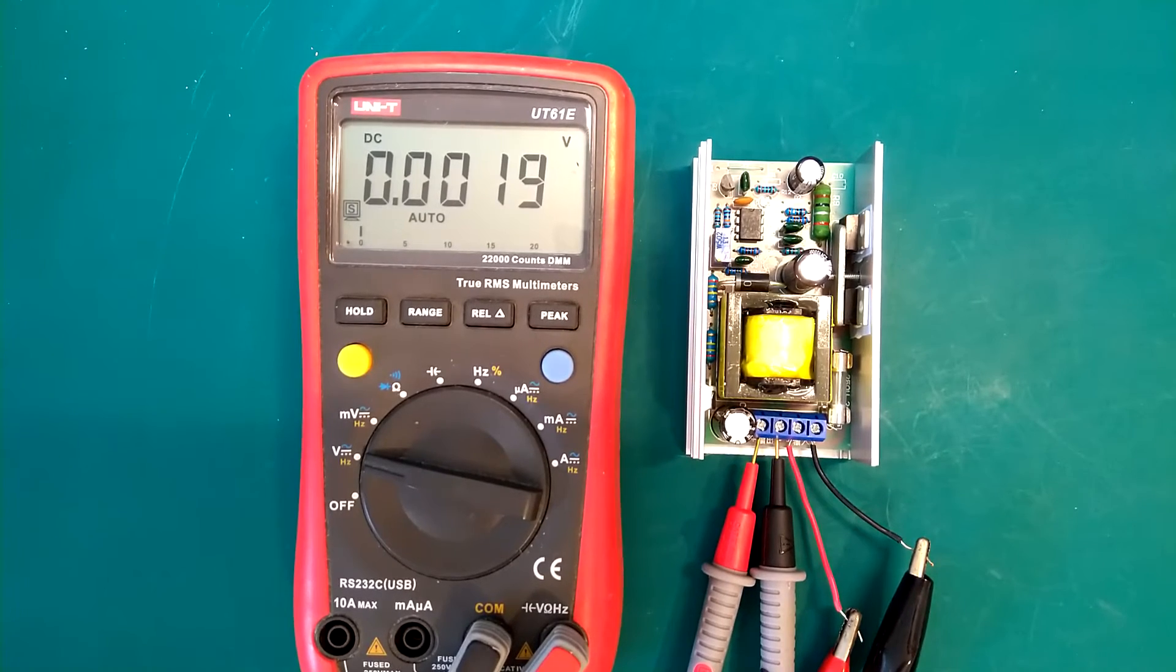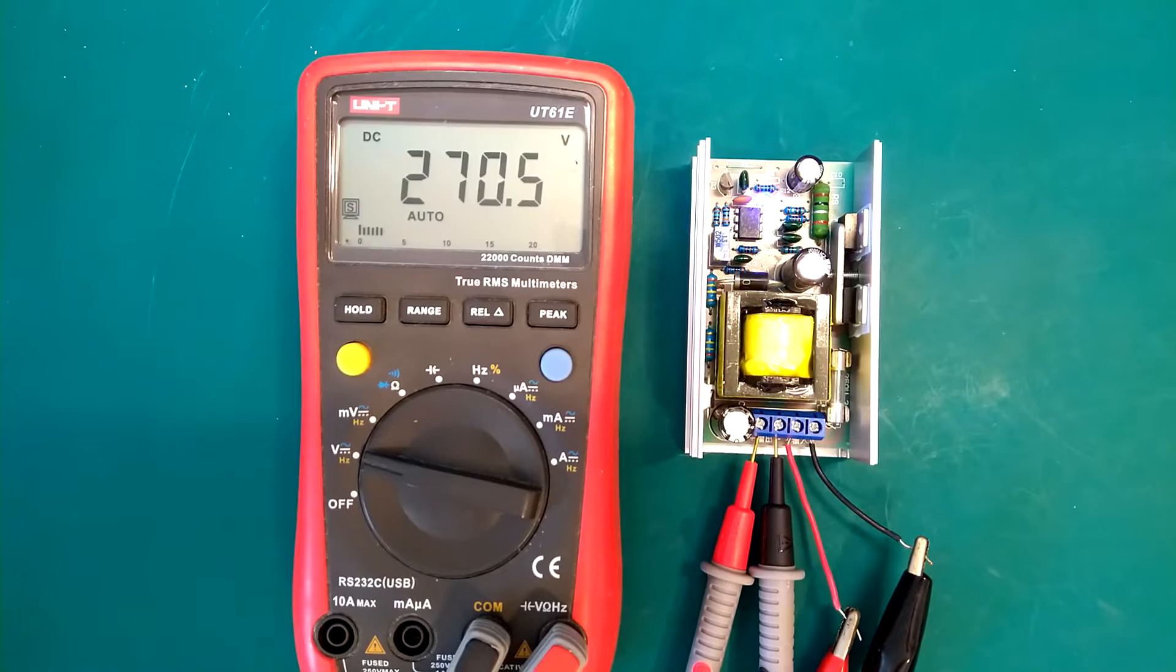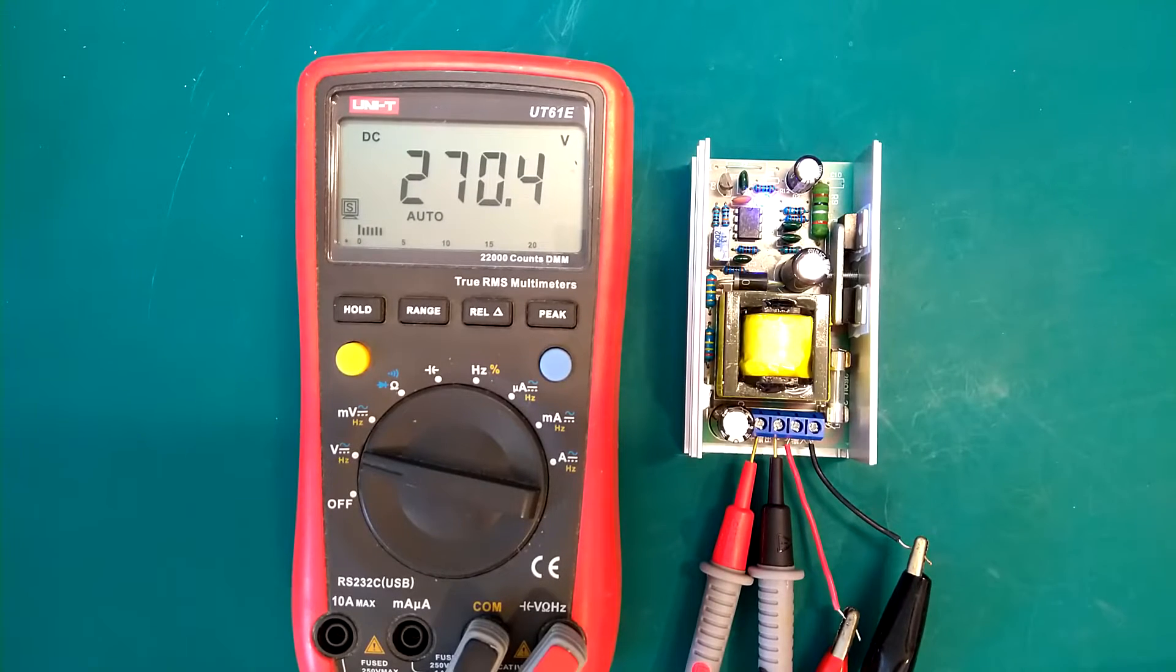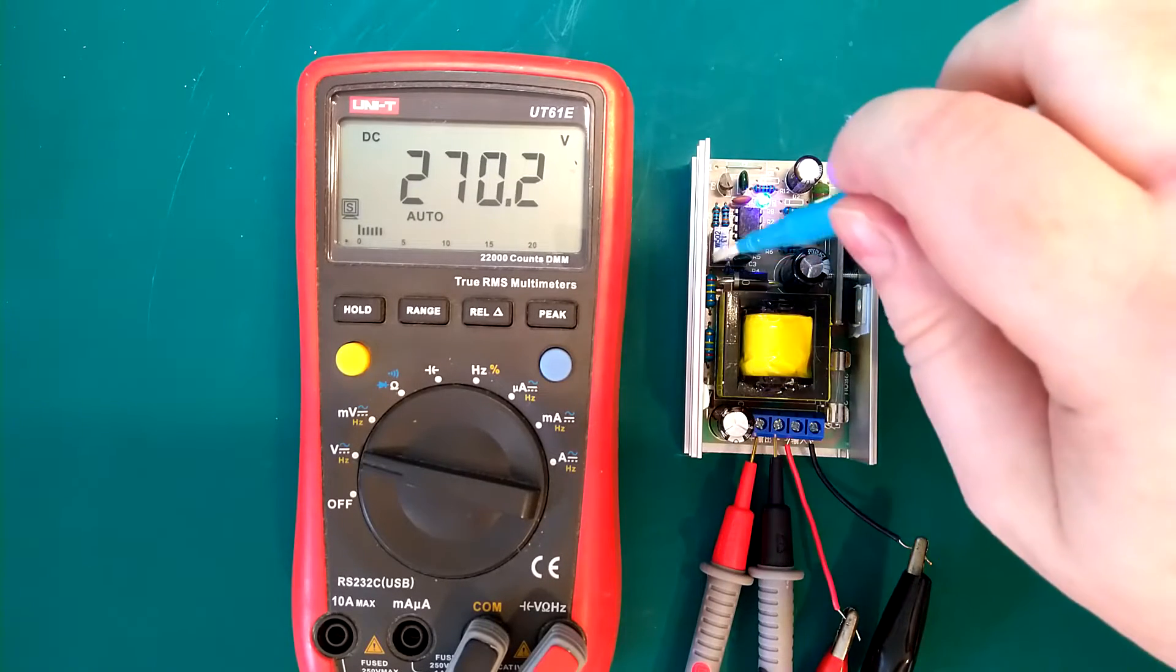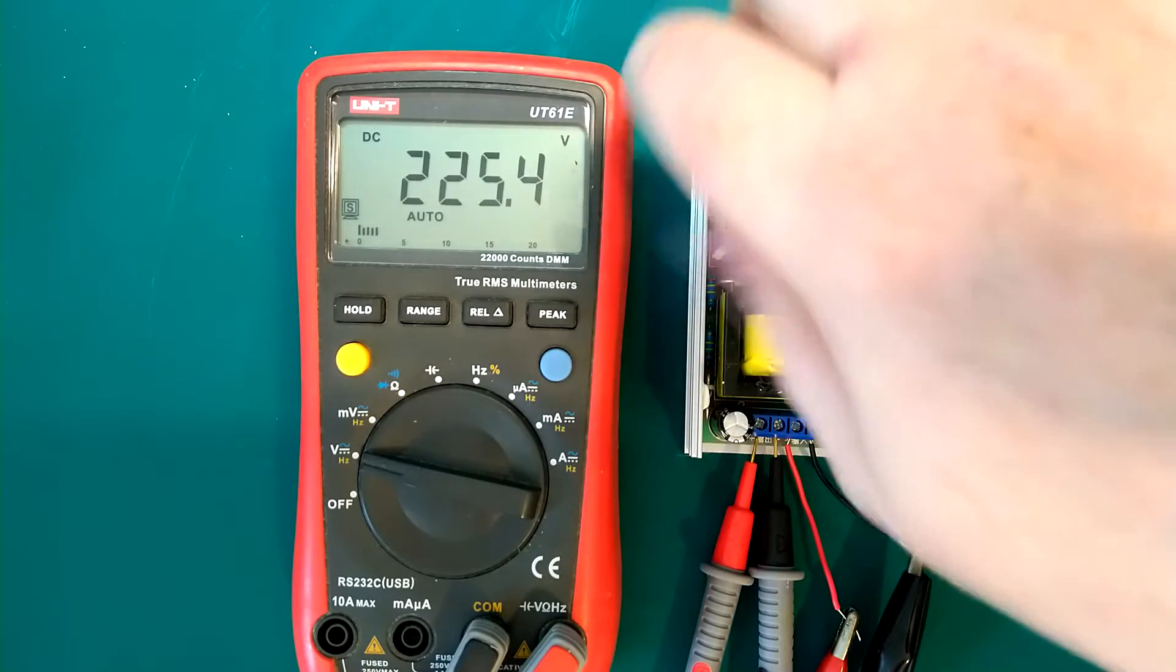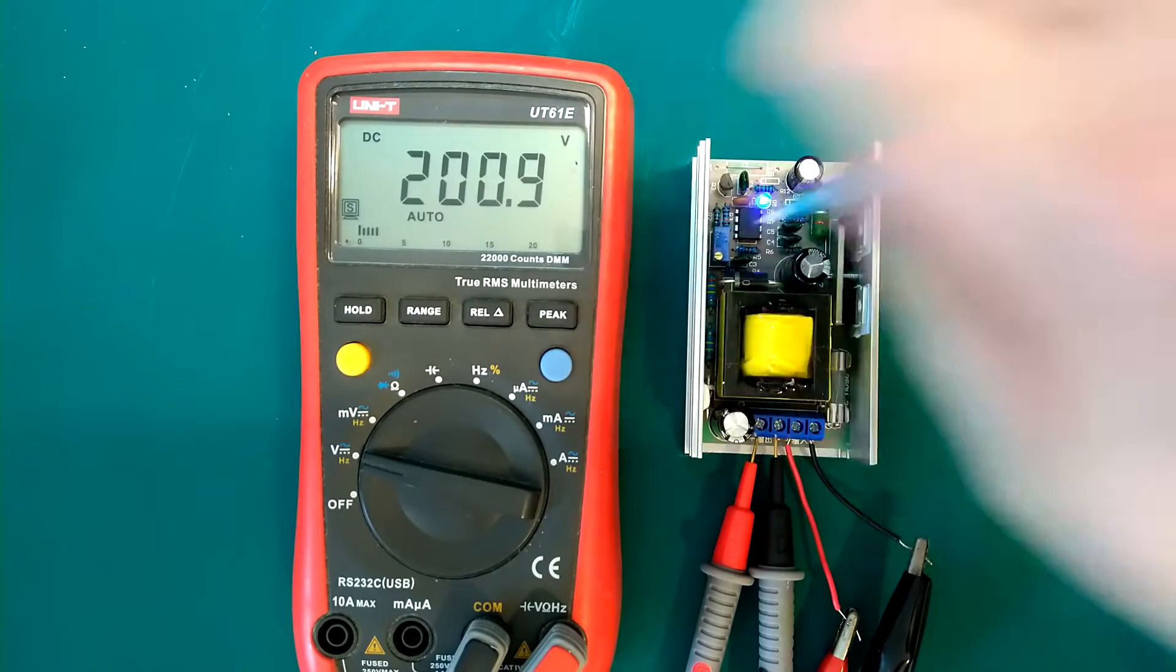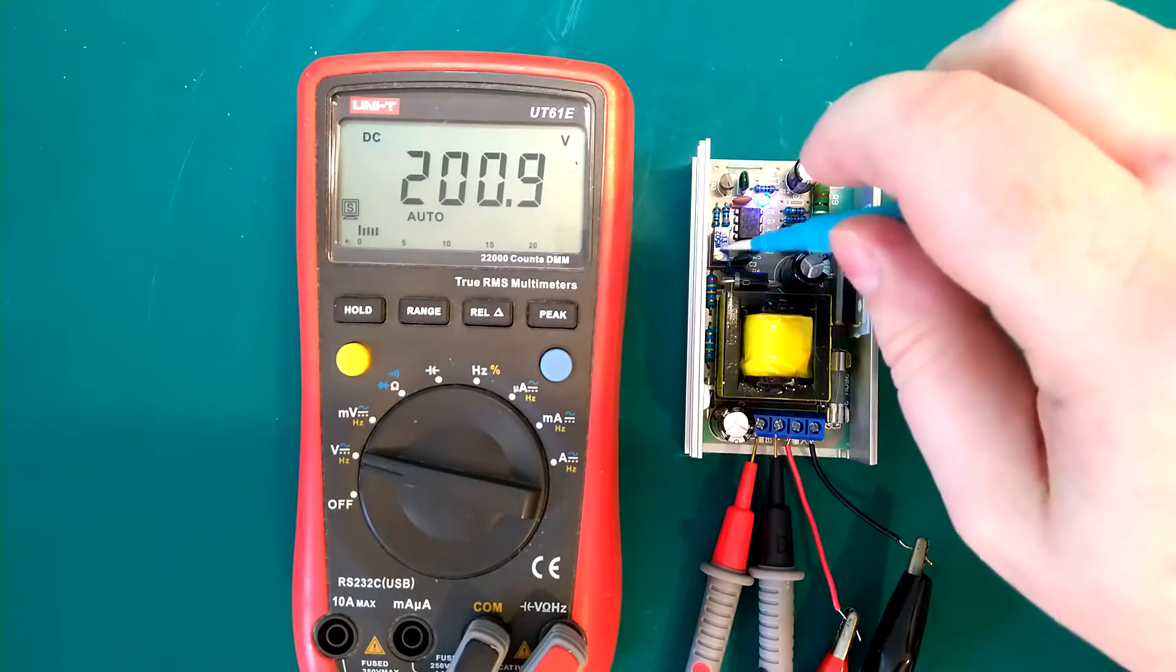I'm switching on now, and there we go. We can see it's set at 270 volts now. Let me just try to adjust that down a bit. So it says minimum 200, that's fairly accurate.